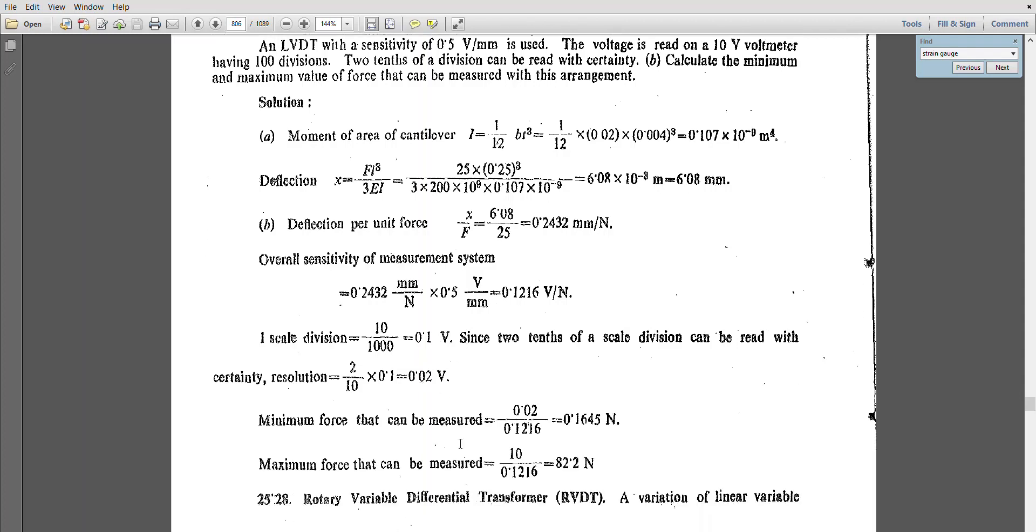How can you find the minimum force? You have the sensitivity value here and you have the minimum voltage. When you divide it, you will receive 0.1645 newtons. What is the maximum value of the voltmeter? That is 10. When you divide with that, you will get 82.2 newtons. So 0.1645 newtons to 82.2 newtons is the range of force that your LVDT can measure.